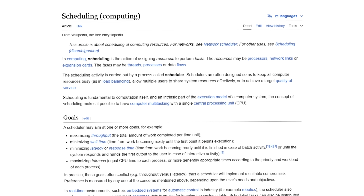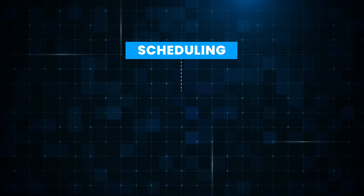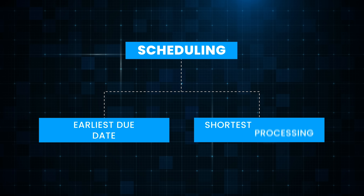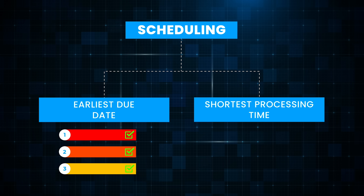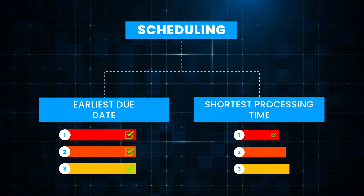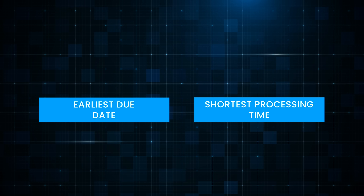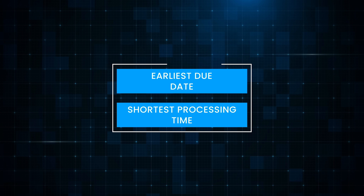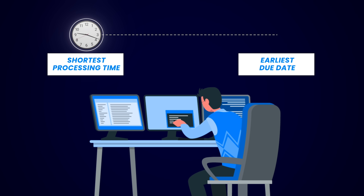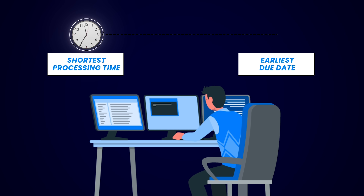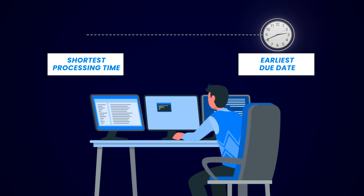Now let's move on to scheduling. In computer science, scheduling algorithms determine the order in which tasks should be executed to optimize efficiency. Two common ones are Earliest Due Date, which prioritizes tasks with the nearest deadlines, and Shortest Processing Time, which focuses on completing quick tasks first. The key is not to follow one algorithm blindly — the real power comes from combining them intelligently. For example, use Shortest Processing Time in the morning when your energy is high to build momentum, then switch to Earliest Due Date in the afternoon to ensure you meet your deadlines. Be flexible and adjust based on your specific situation.